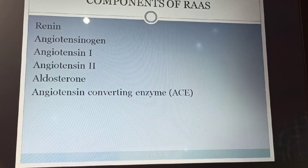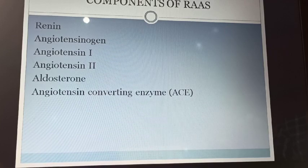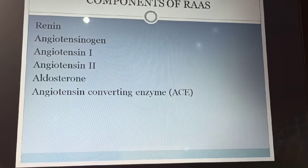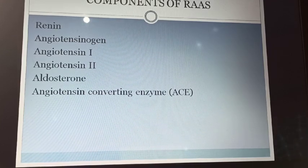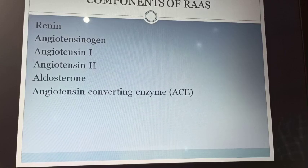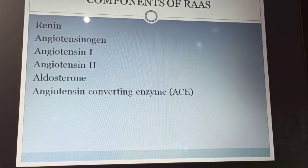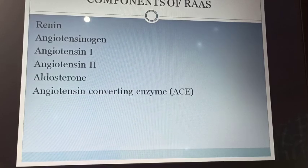Then aldosterone — aldosterone is a steroid hormone produced by the zona glomerulosa of the adrenal cortex or adrenal gland. Then angiotensin-converting enzyme, which is secreted in the lungs and kidney by the endothelium of the blood vessels.